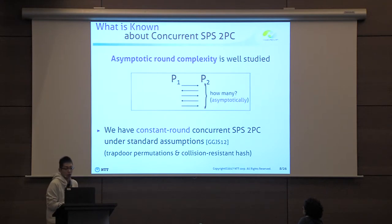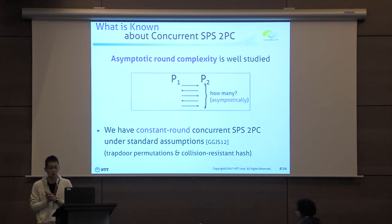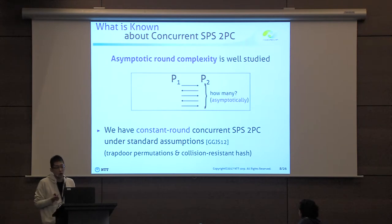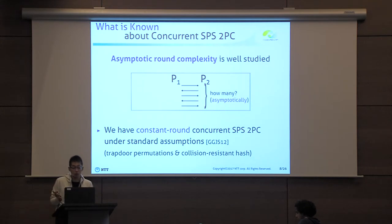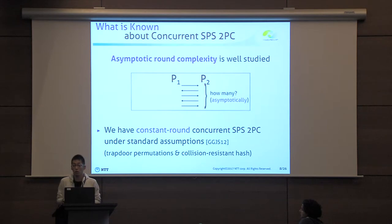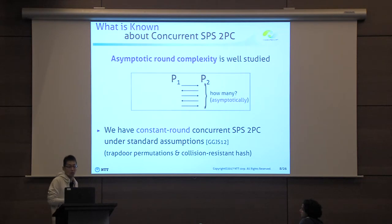Let me explain what is known about concurrent SPS secure two-party computation. We already have a lot of positive results, and in particular, its asymptotic round complexity has been extensively studied. We know that we can construct constant-round concurrent SPS 2PC under standard assumptions, such as trapdoor permutation and collision-resistant hash functions. So regarding asymptotic round complexity, we know how to achieve optimal round complexity under standard assumptions.